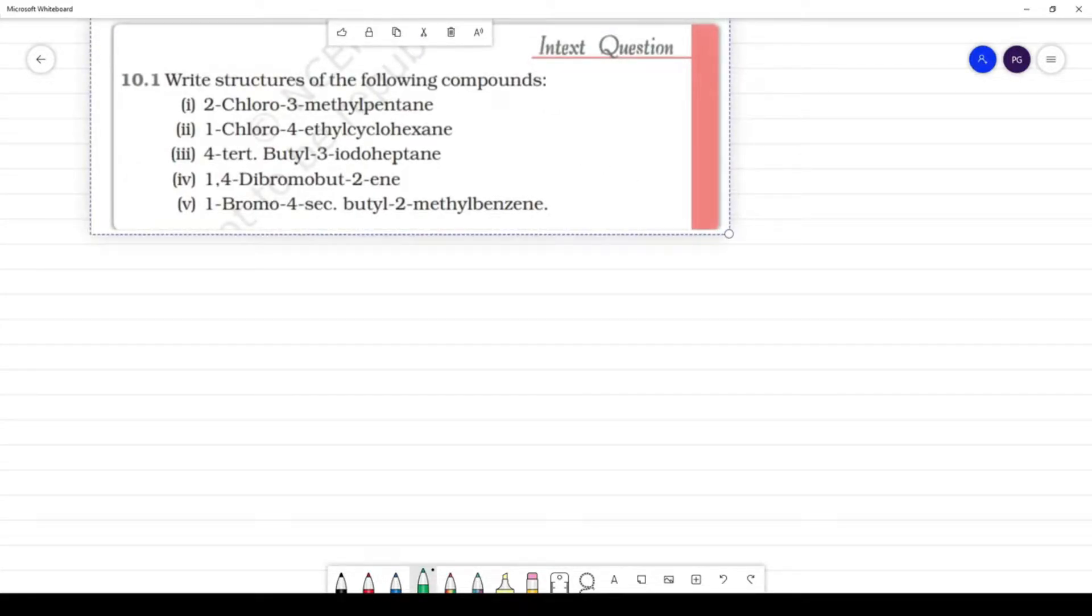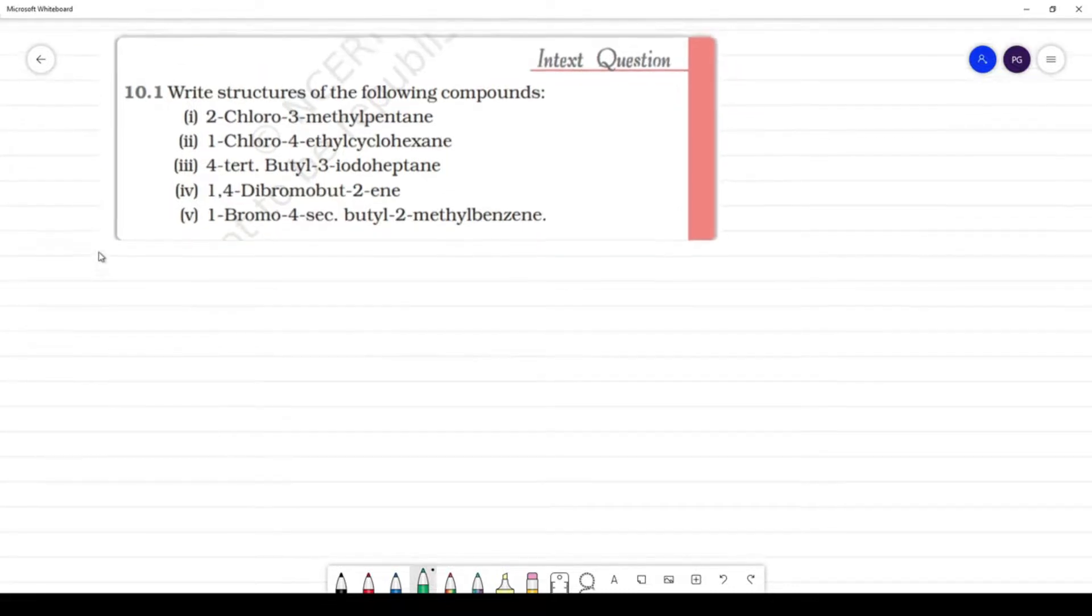Now, the structures of the following compounds. The first one: 3-chloro-2-methyl-pentane.